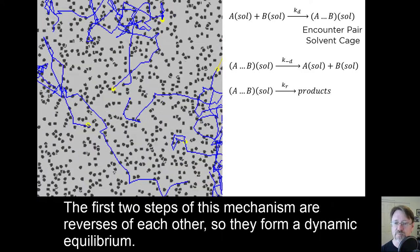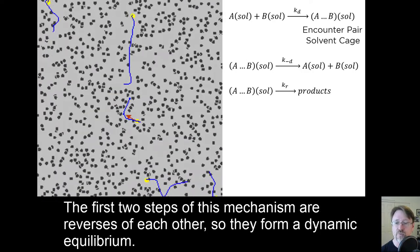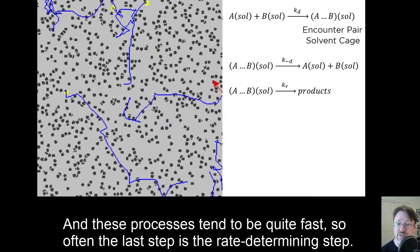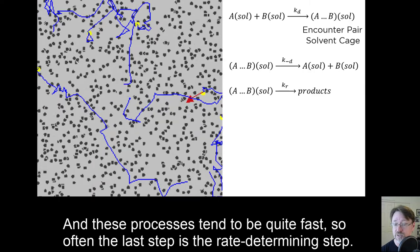The first two steps of this mechanism are reverses of each other, so they form a dynamic equilibrium. And these processes tend to be quite fast, so often the last step is the rate determining step.